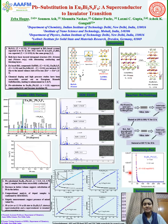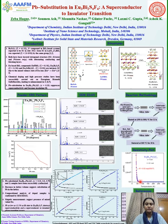This is the resistivity plot for x = 0.25 doped sample within the temperature range 300 to 50 Kelvin. The normal state resistivity corresponds to a semi-metal behavior, which increases drastically below a temperature of 50 Kelvin.